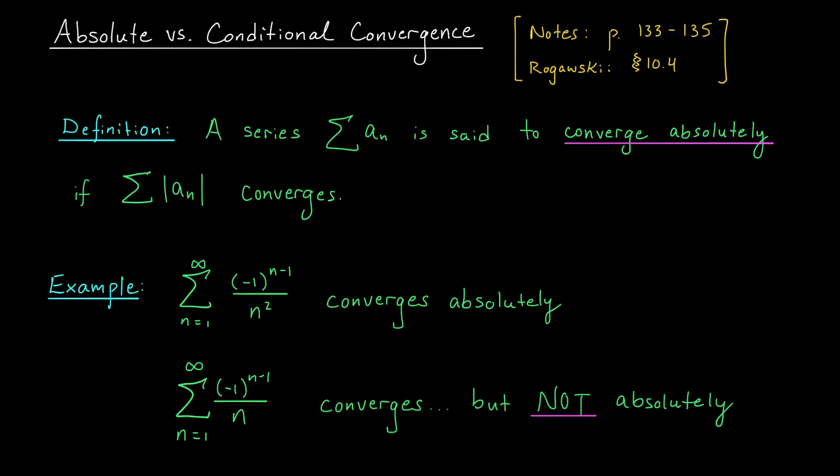Hi everyone and welcome back. In our last lesson we introduced the alternating series test, which can be used to test the convergence of series whose terms flip back and forth between positive and negative. This is just one of a few tests in our library that can handle series with negative terms, as a lot of our tests require the terms to be positive. We're going to see two more tests in the very near future — the ratio test and the root test — that can also handle series with negative terms.